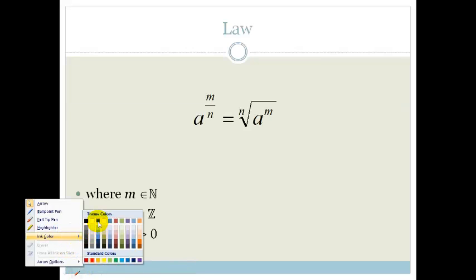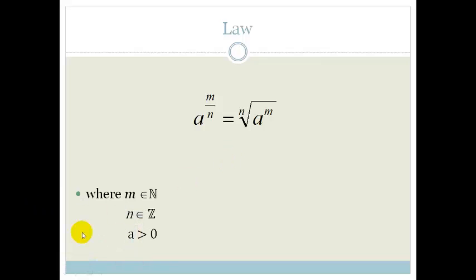So let me just get my pen out. A rational number is one that we can write as a fraction. So a rational exponent is an exponent that can be written as a fraction, and the law is